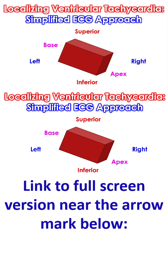Localizing the origin of ventricular tachycardia from a 12-lead ECG is a critical skill for planning ablation and identifying the underlying pathology. While many algorithms exist, a stepwise simplified approach focusing on the four directions of the heart is often the most practical. To find where the VT is coming from, think of the heart as a 3D box — use different ECG leads to check left vs right, superior vs inferior, and base vs apex.